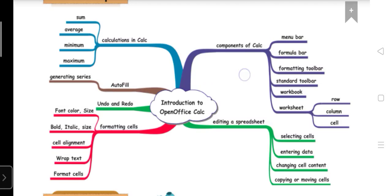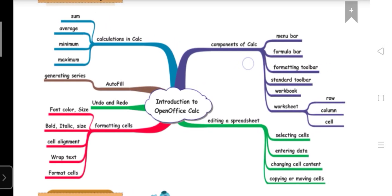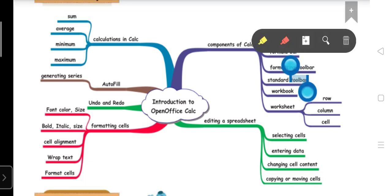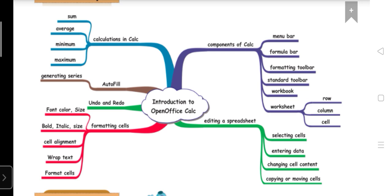In OpenOffice Calc, firstly we learn about the components of the Calc: menu bar, formula bar, formatting toolbar, standard toolbar, then workbook and the worksheet.